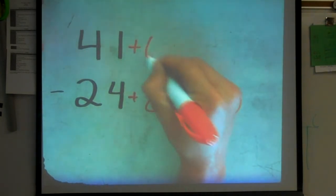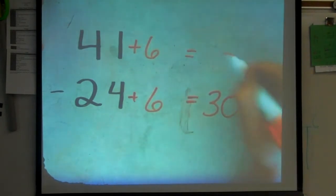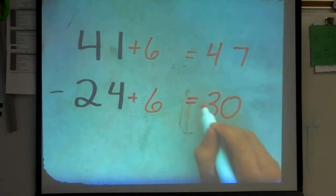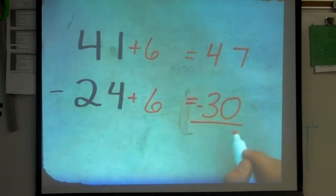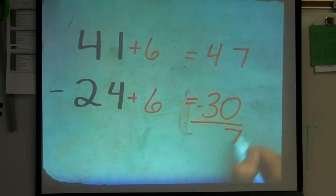So, I do the exact same thing to the top, just add 6, and that gives me 47. So now I have 47 minus 30. All the big numbers are on top. 7 minus 0 gives me a difference of 7. 4 minus 3 gives me a difference of 1.